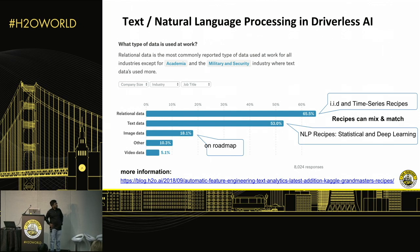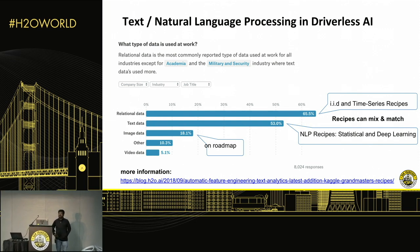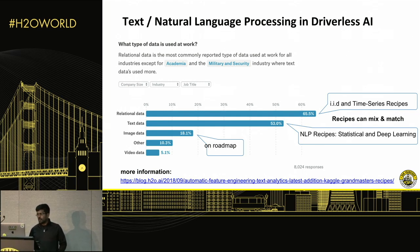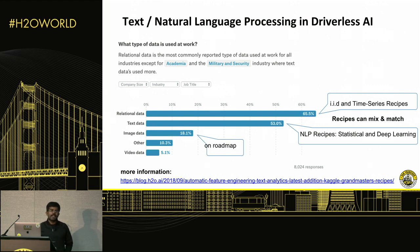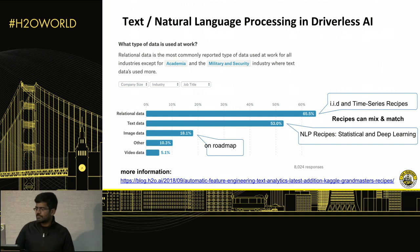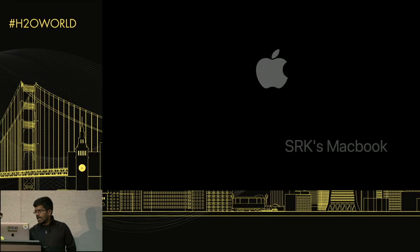You would have gone through all the previous presentations on the new features in Driverless AI and how time series was in Driverless AI. When we were looking at what type of data we can include in Driverless AI, a Kaggle survey says about 65% of people use relational data — IID or time series. We started with that, and the next most popular is text data, comprising 53%. So we started with NLP recipes. Currently, we also have image data on our roadmap for Driverless AI.